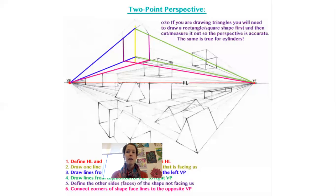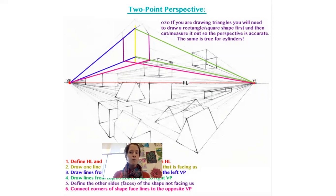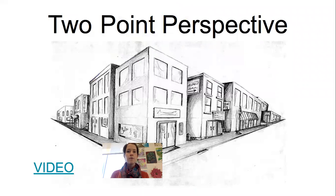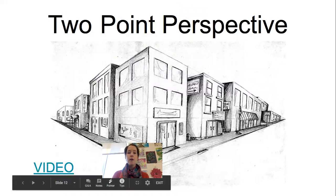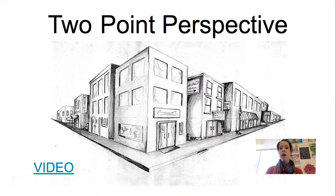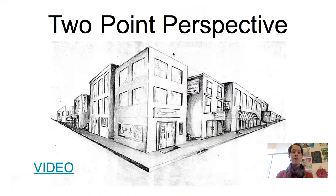Here are some examples of two point perspective — remember, this is where you've got vanishing points on either side. These are just simple form examples. There is also a link you will have access to that shows how to follow along and draw a particular cityscape similar to what you see here.